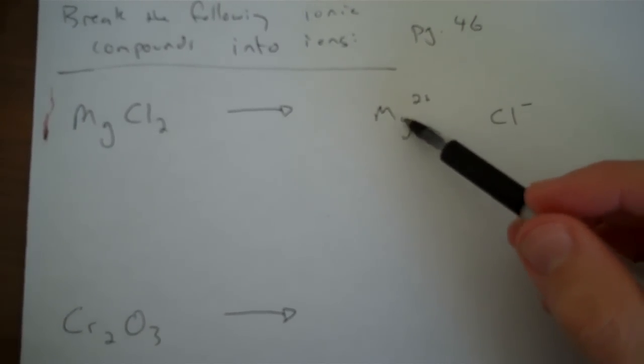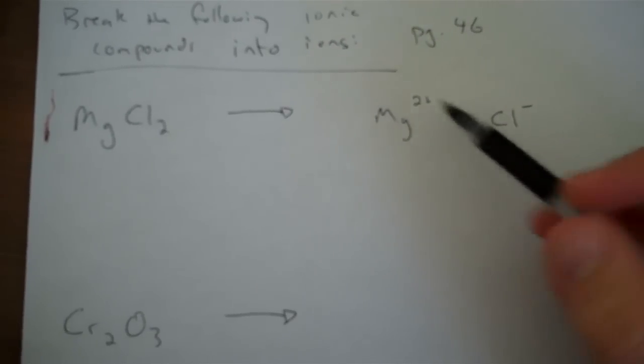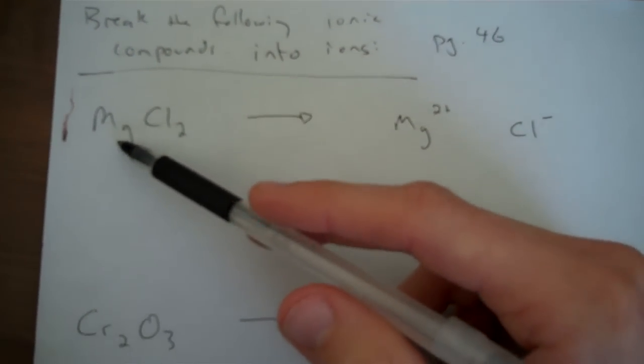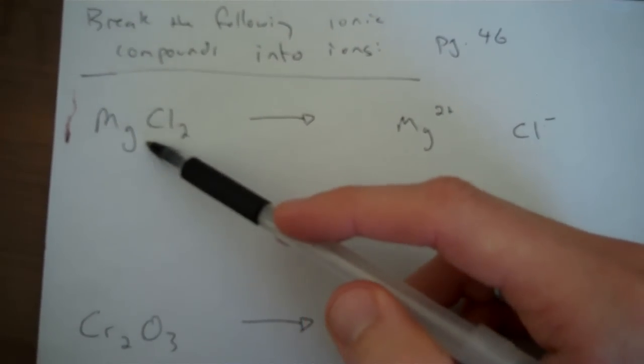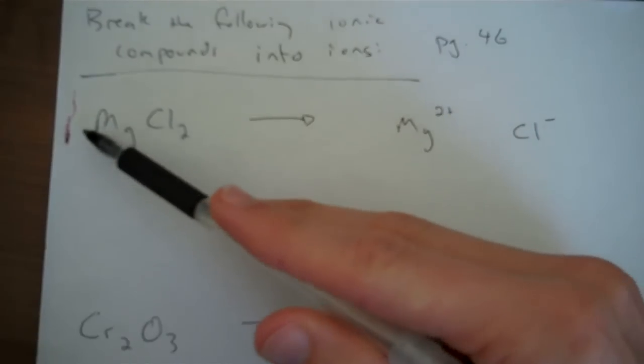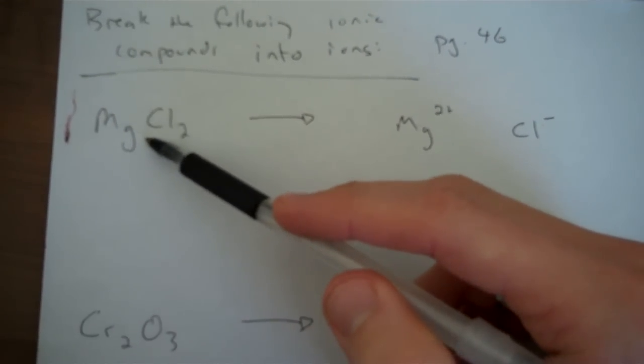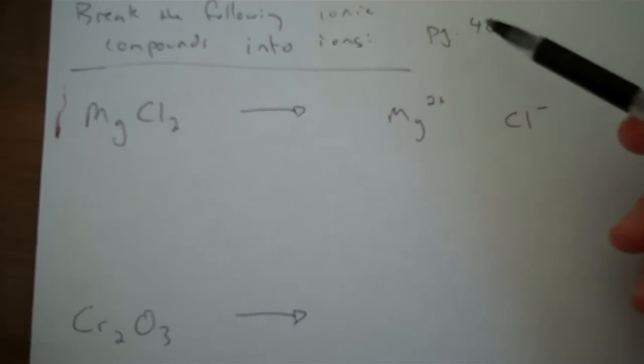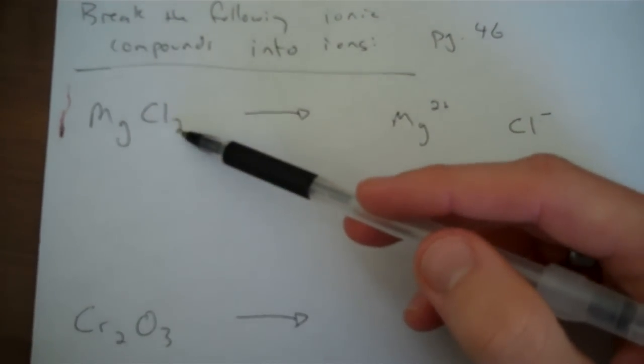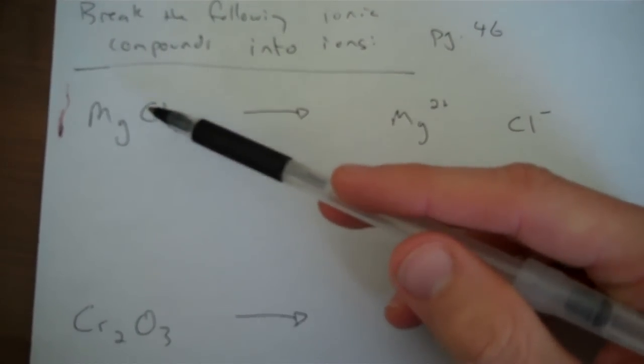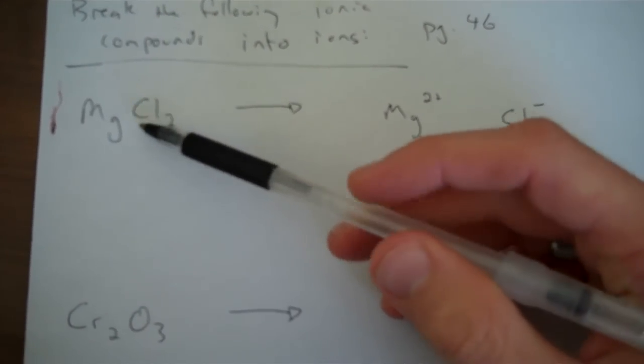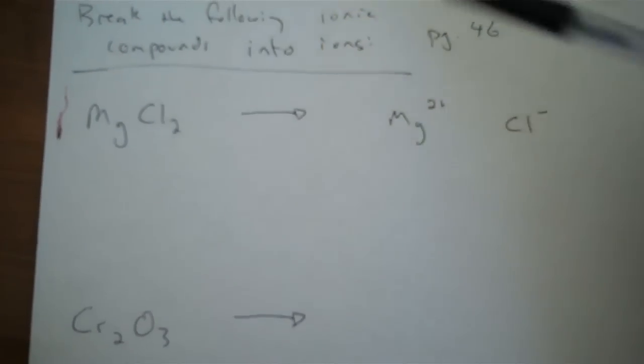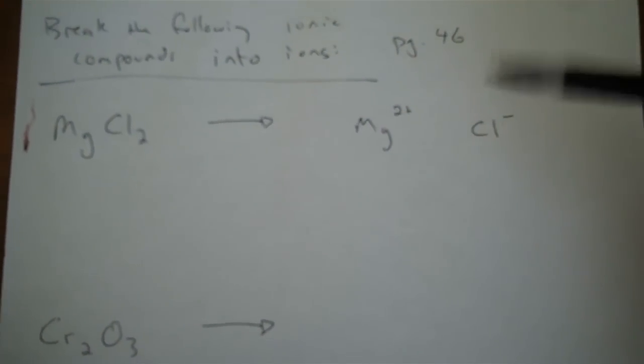But I'm not done because I need to know how many of each ion I have in this compound. So I look back at it, and I see that of the magnesium, I only have one. There's no subscript, so it tells me I have 1. In chemistry, we don't write 1, so I just leave this one blank. The chloride, though, I have subscript 2, which tells me that I have 2 chloride ions in every ionic compound of MgCl.